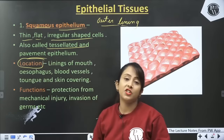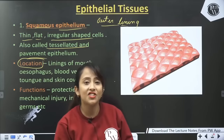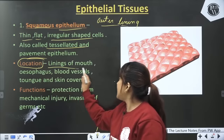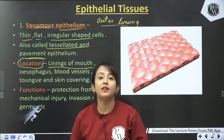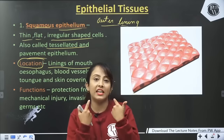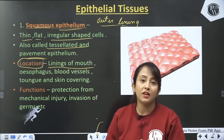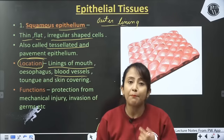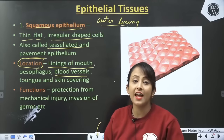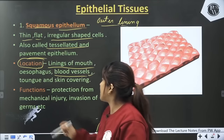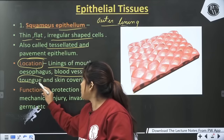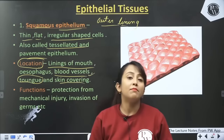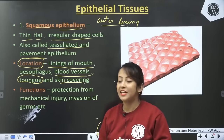If we look at the location — where squamous epithelium is found — they are found in the linings of mouth, esophagus and blood vessels. In our mouth lining, food pipe lining, and in blood vessels like arteries, veins, and capillaries, squamous epithelium is found there. It is also found in our tongue and skin.